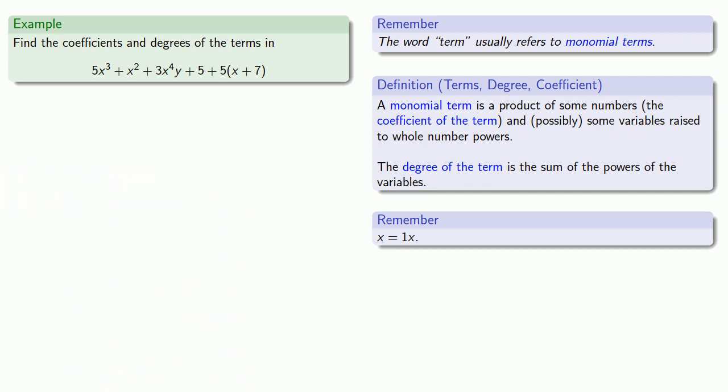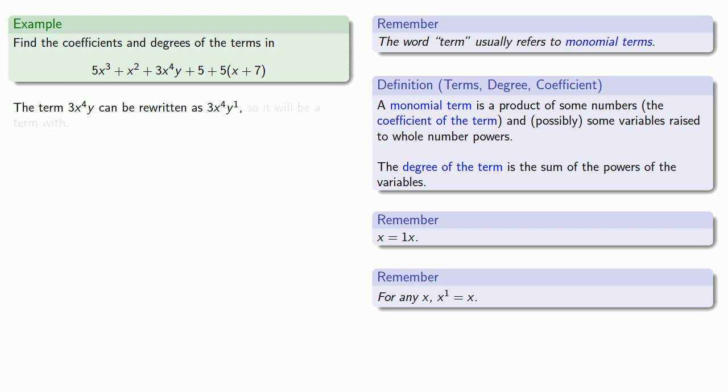The next thing is the product of a number and some variables, so we have the term 3x to the fourth y. Here another useful rule of exponents is worth remembering. For any x, x to power 1 equals x. That means the term 3x to the fourth y can be rewritten as 3x to the fourth y to the first. So it's a term with coefficient 3 and degree the sum of the exponents, 4 plus 1, or 5.